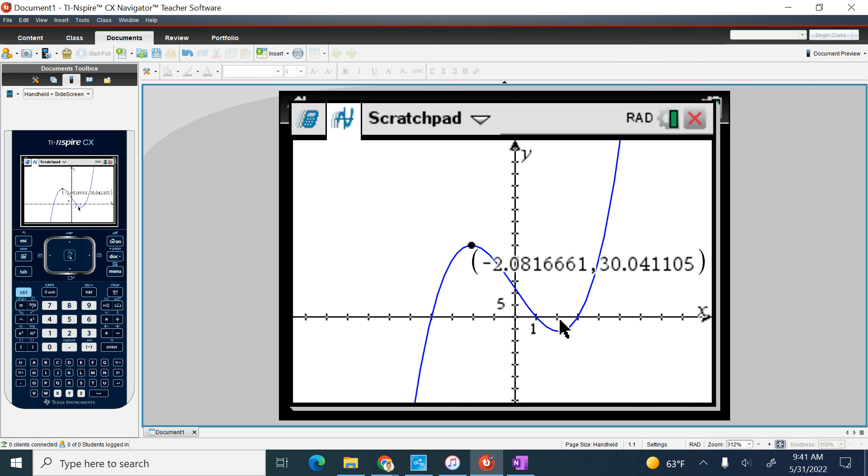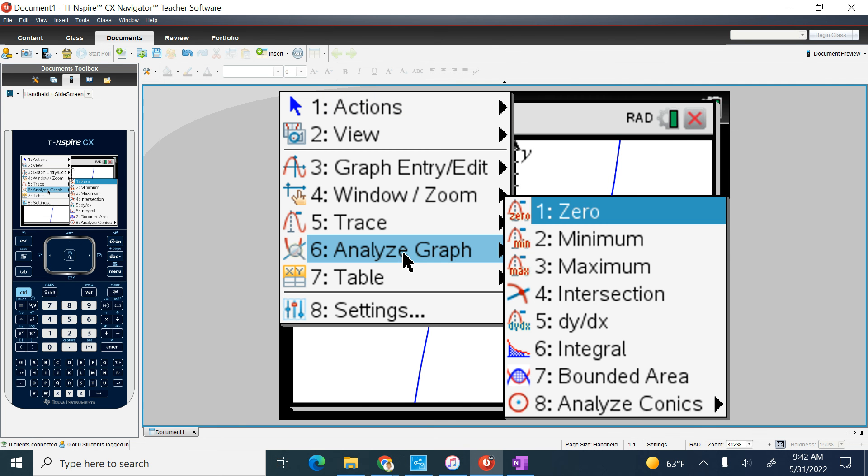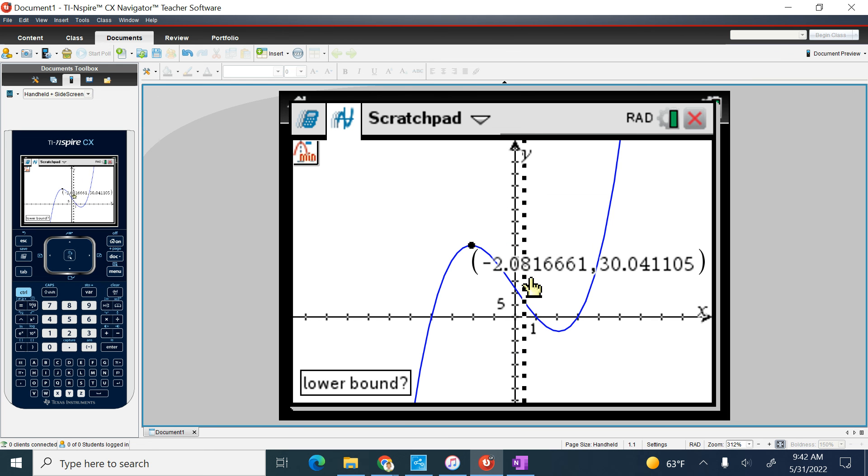And then the next one I'm going to do is my minimum. Works very same. So I'm going to go menu, analyze graph, and we're going to go to minimum. I'm going to click to the left of this minimum right here, so the left.